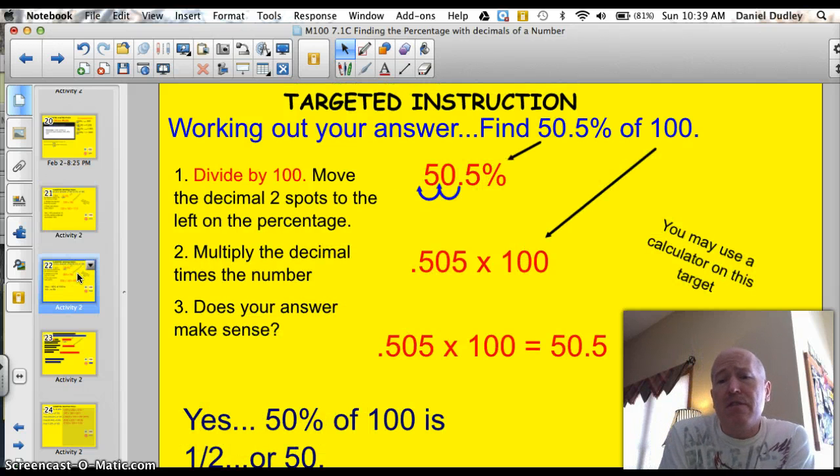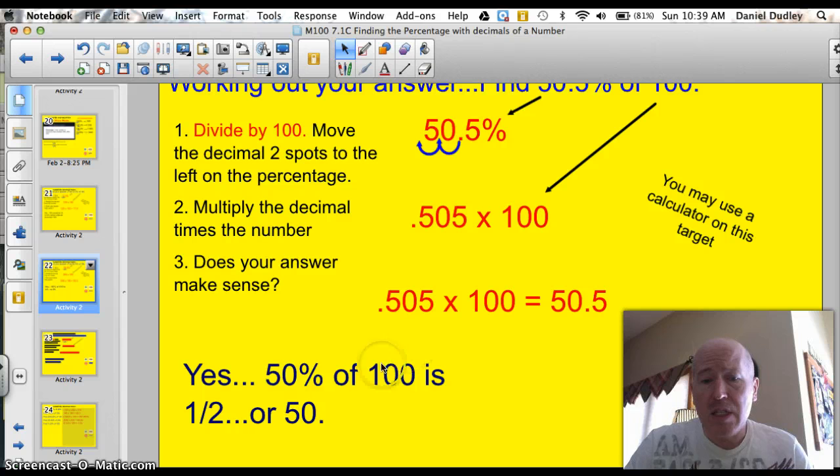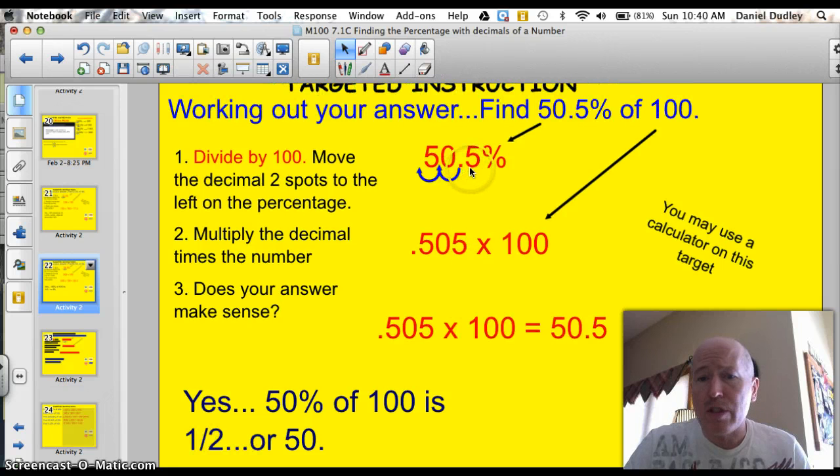Here's another one. We need to find 50.5% of 100. Write down the number, 50.5%. That's step one. Then we need to divide by 100. So we're going to move that decimal two spots to the left. We end up with .505. We multiply that times 100. .505 times 100 is 50.5. Does that make sense? Well, yeah, because 50% of 100 is a half, or 50, and we're just a little bit more over, a half percent more. So that answer makes sense.